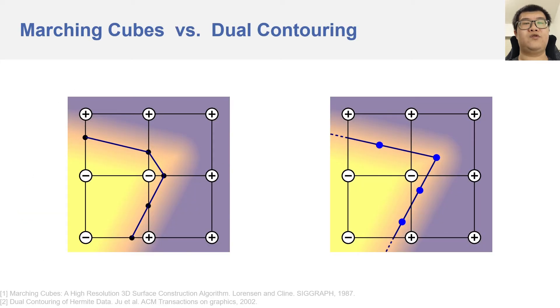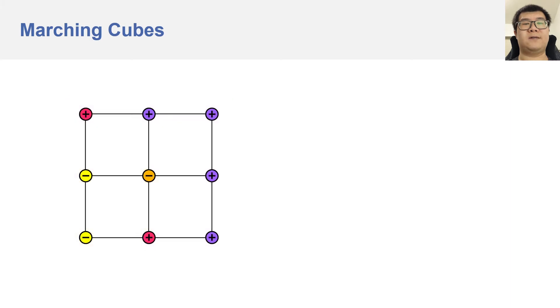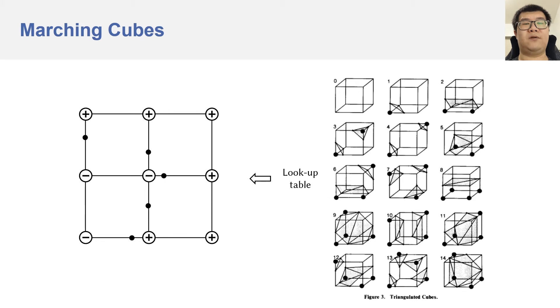Let us quickly review two classic isosurfacing algorithms, marching cubes and dual contouring. We start with a 2D example. Given an implicit field, marching cubes first samples a grid of points and their signed distances, and then computes approximate intersection points on grid edges from those signed distances. Finally, it refers to a lookup table to create the surface within each voxel.